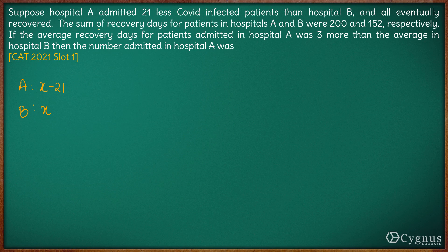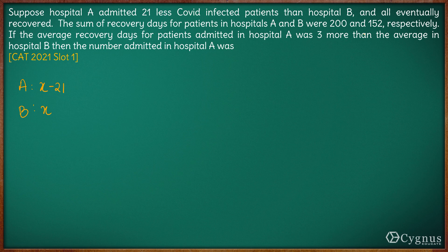We are also given that the sum of recovery days — which means the total number of days for which all patients were in the hospital — for hospital A and B were 200 and 152 respectively. So the x patients in hospital B were in the hospital for a total of 152 days, and for hospital A it was 200 days.